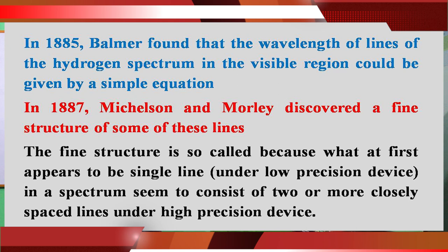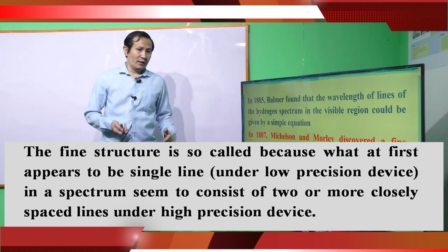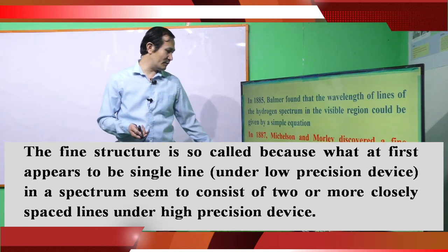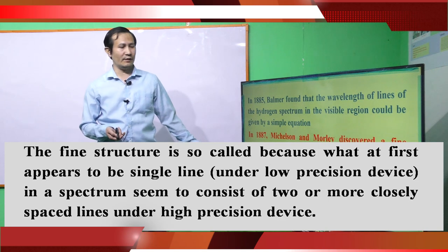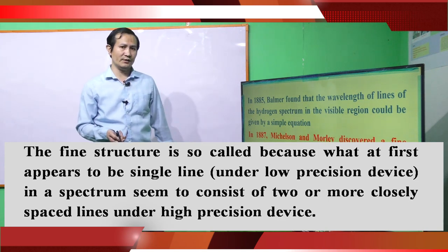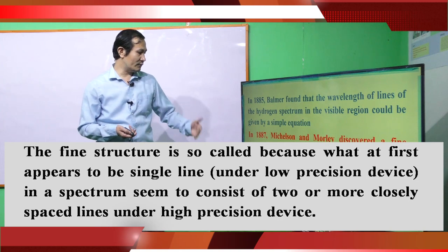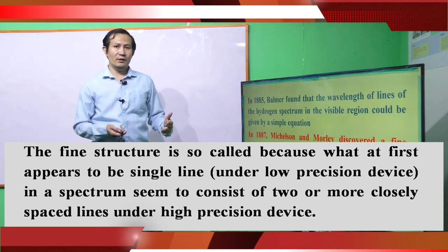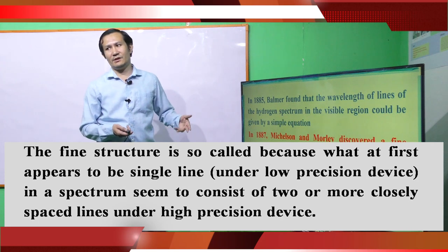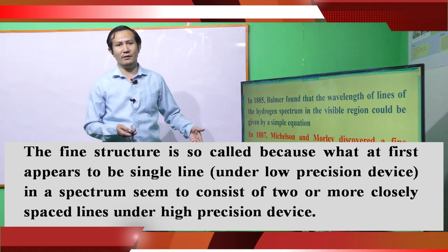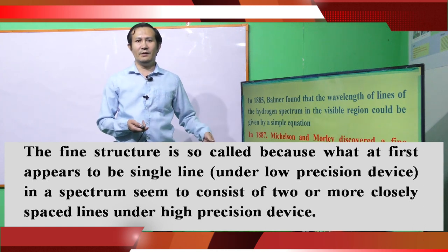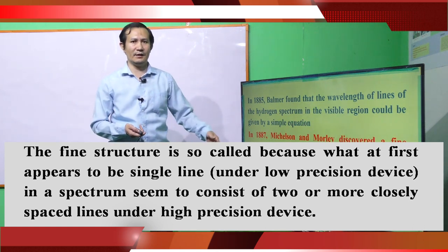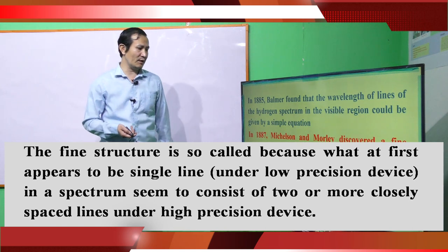Rydberg further studied and could generalize the equation made by Balmer to fit all those series. So, the term fine structure refers to what was seen as a single line in earlier devices now appearing to consist of a group of two or more lines. That is your fine structure — that's why we call it fine structure.